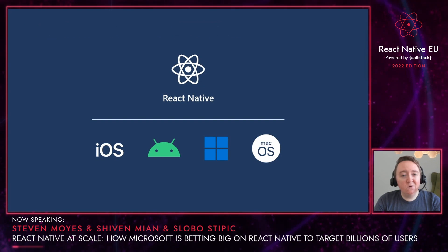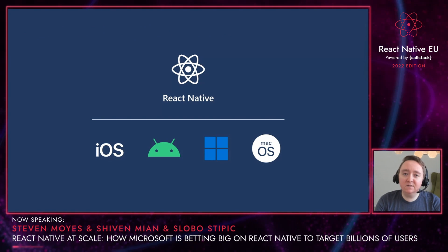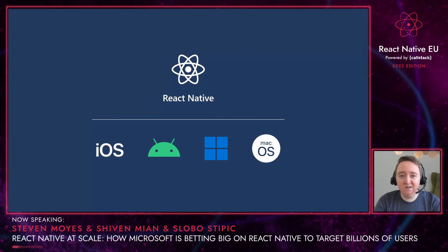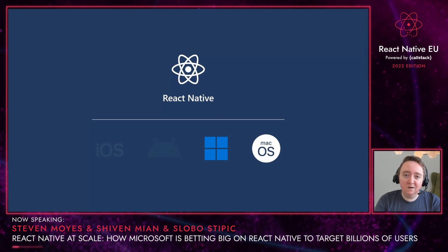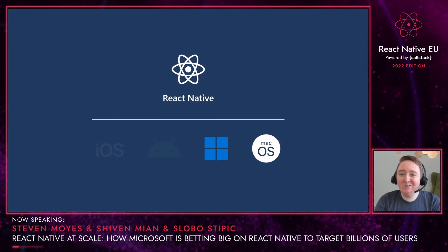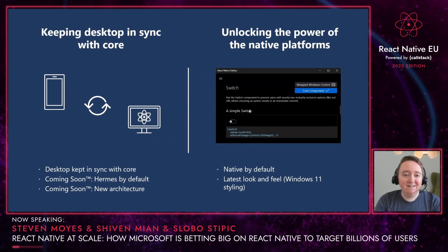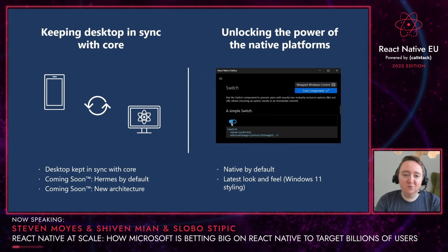In order to unlock the ability to bring your apps to both mobile and desktop, Microsoft is investing in improving all of these platforms — from iOS to Android, to Windows to macOS. Let's start with React Native for desktop, which includes both Windows and macOS.